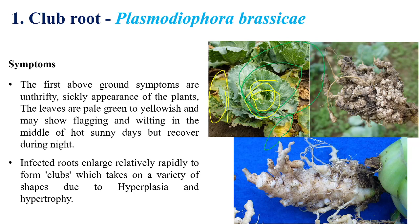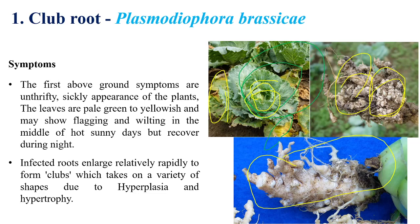In the below-ground parts, the root region shows bulged or club-like symptoms. This is mainly due to hypertrophy and hyperplasia, caused by the production of a huge amount of cytokinins and growth-promoting substances. Above ground, yellowing of leaves, reduced pod size, and pale green discoloration can also be observed.